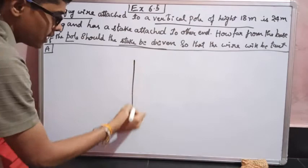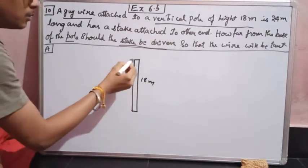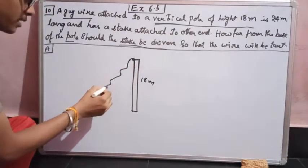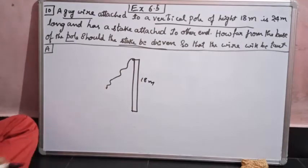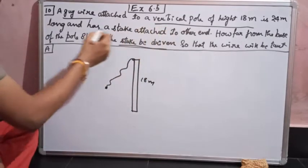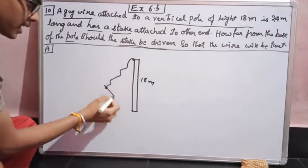We have a vertical pole. Its height is 18 meters. Now we are attaching a guy wire. Assume this is a guy wire which is attached to this electric pole. This is the cable that is attached, and that cable has a stake attached to the other end.